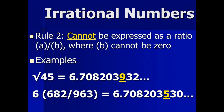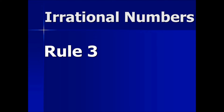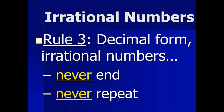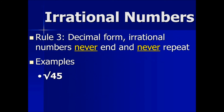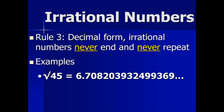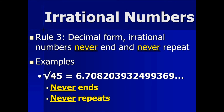Please take note of the symbols at the end of the numbers — this tells us that the number continues. This moves us into rule number 3: in decimal form, irrational numbers never end and never repeat. We will use our example, the square root of 45. In decimal form, it never ends and it never repeats.